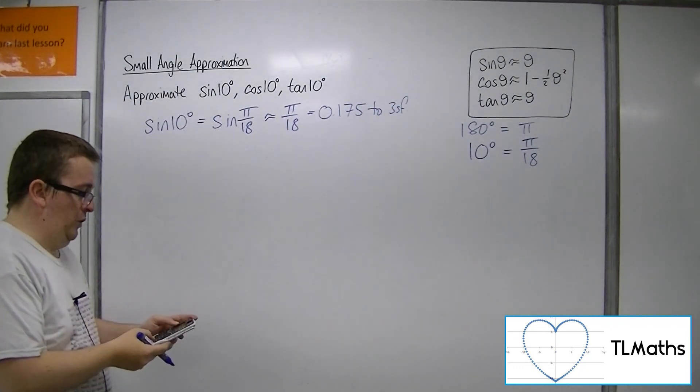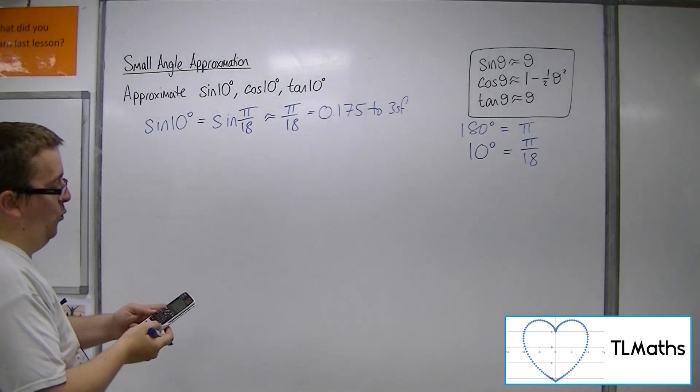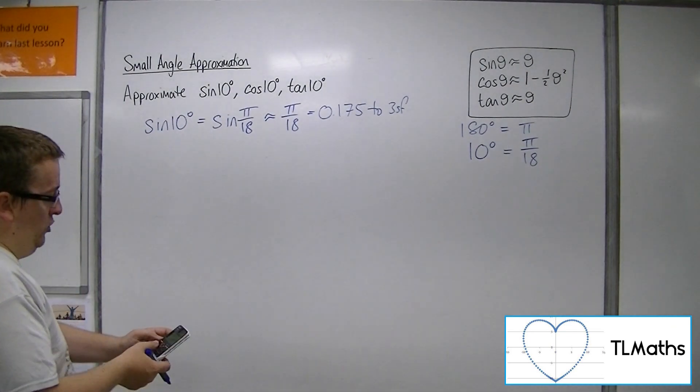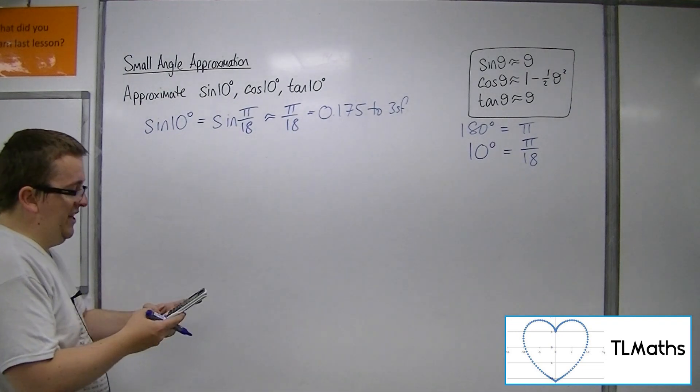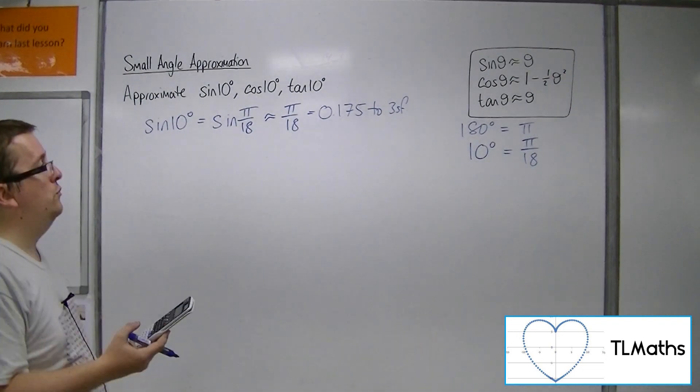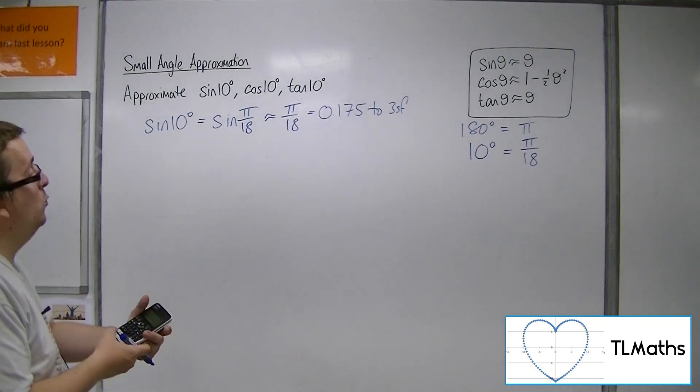So if you check sine of pi over 18, we get 0.174, which is very close to 0.175. If you change your calculator into degrees and then do sine of 10, you should also get 0.174 to 3 sig fig. So we can see that this method is working.